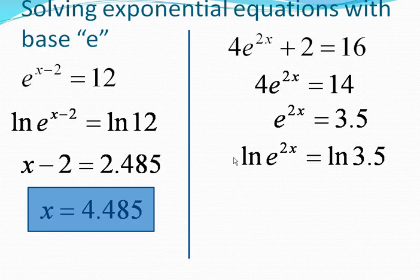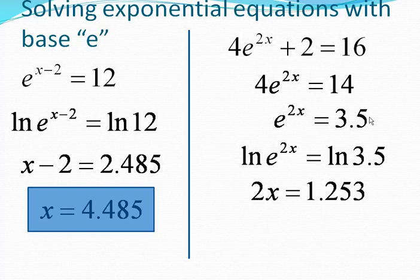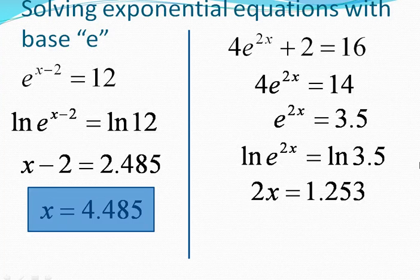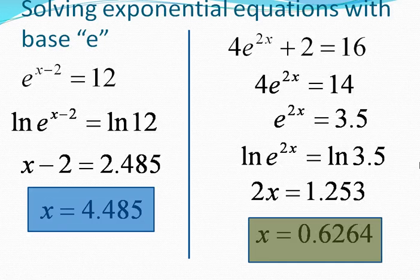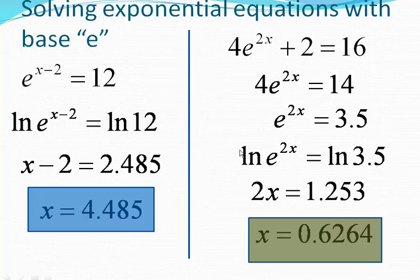And then it's something that's a little bit more manageable. You can use your natural logs to cancel out the exponential, and you get 2x on the left, and the natural log of 3.5 is 1.253. When you put it in your calculator, solve for x. Get rid of that 2 by dividing. You get 0.6264. And that is the answer.